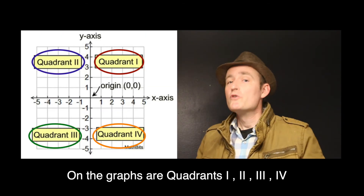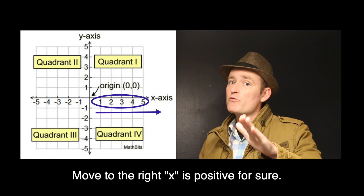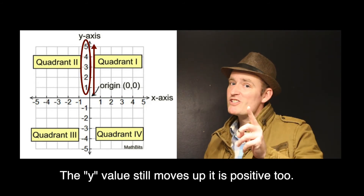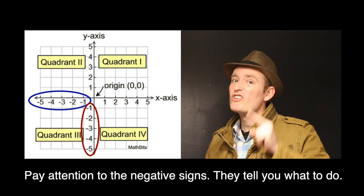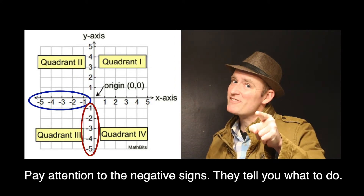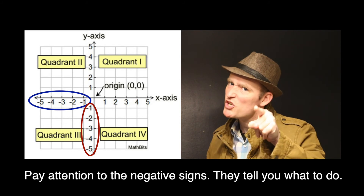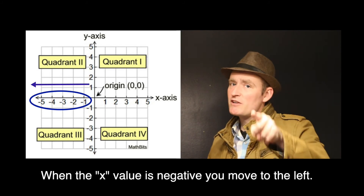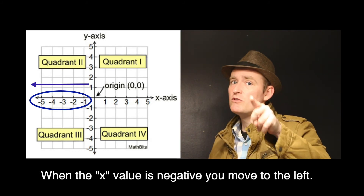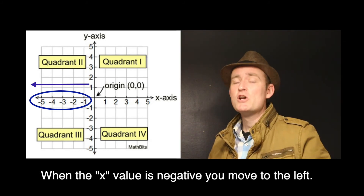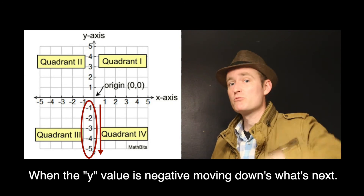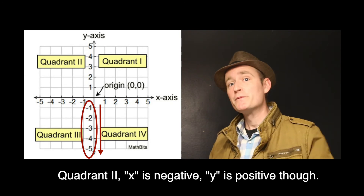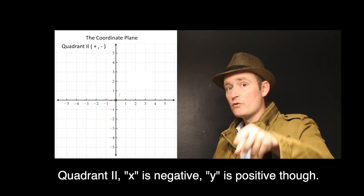On the graph, for quadrant 1: you move to the right, X is positive for sure. The Y value still moves up as positive too. Pay attention to the negative signs and they tell you what to do. When the X value is negative, you move to the left. When the Y value is negative, moving down is what's next.